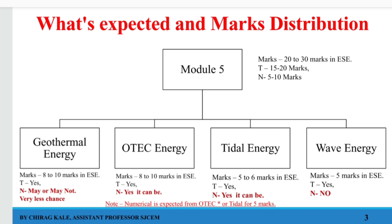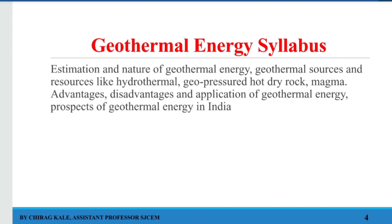Numericals may not be asked from geothermal energy, but we will still be touching on numericals. From all these particular topics, the least important type of numerical is from geothermal energy. I will be talking about OTEC in my next video, where it is about 8 to 10 marks. From OTEC as well as tidal energy, we can get a numerical of only 5 marks. Wave energy only consists of theory.